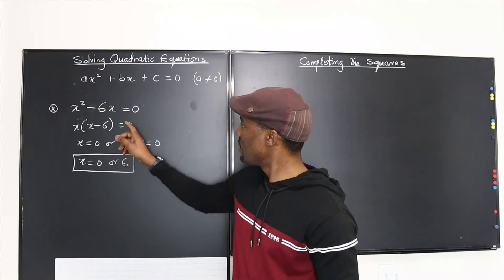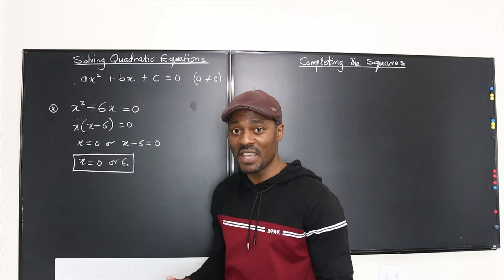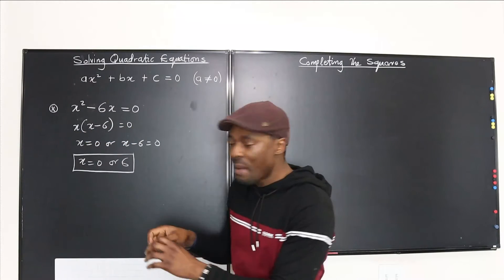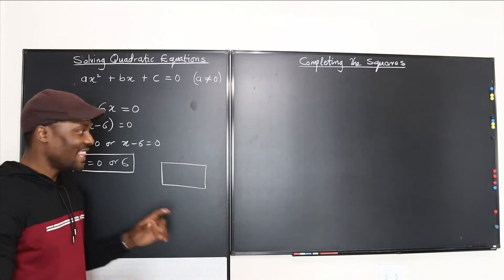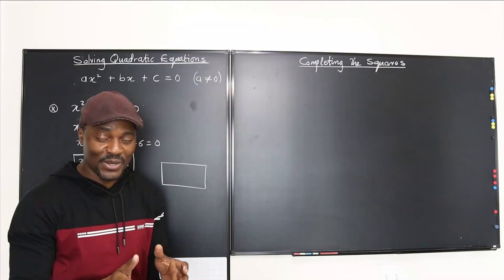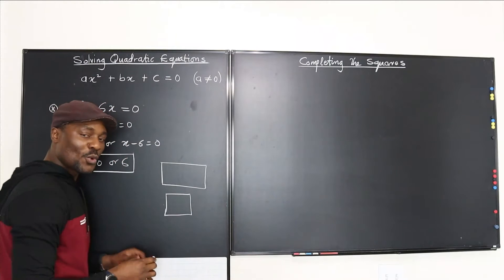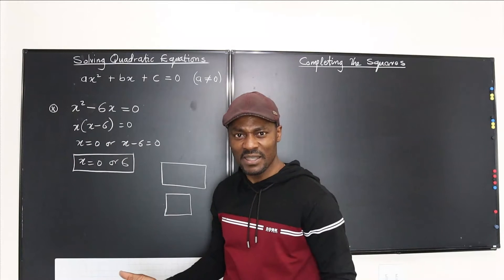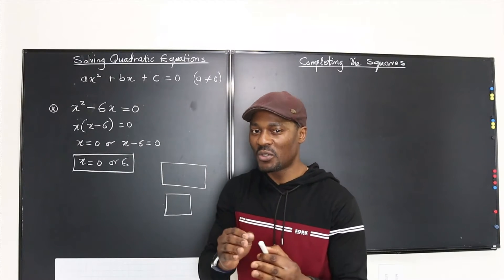This is easy because we only have two terms. But let's say you are required to use completing the square just to develop the skill. When you multiply two terms that are not exactly the same, you have a rectangle, not a square. A square only occurs when both sides are exactly the same — like x squared or x minus 6 squared — not one thing multiplying a different thing.